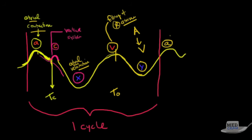To review: A is atrial contraction; C is ventricular contraction; X descent is atrial relaxation; V is passive atrial filling; and Y descent is blood flowing from the atria down to the ventricle before the next atrial contraction. Thank you for joining us. Look for the second in the series, where we discuss the pathology and how this waveform can help us make diagnoses.